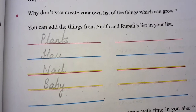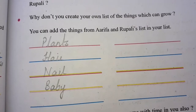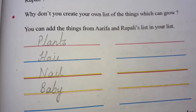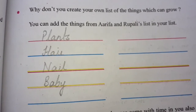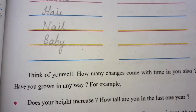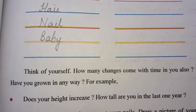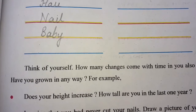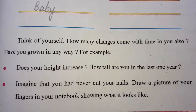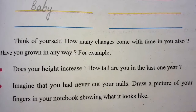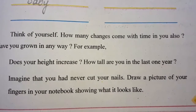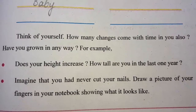Plants grow. Your hair grows. Your nails grow. A baby — one tiny child — grows up to become a young person, then an adult, then old. Think about yourself. How many changes come in you over time? For example, does your height increase? How tall have you grown in the last one year? Imagine that you had never cut your nails. Draw a picture of your fingers in your notebook showing what it would look like.